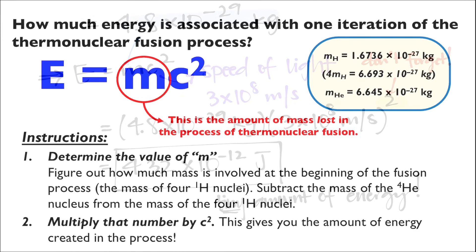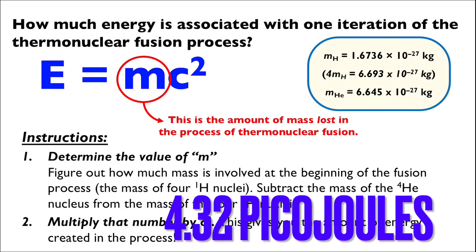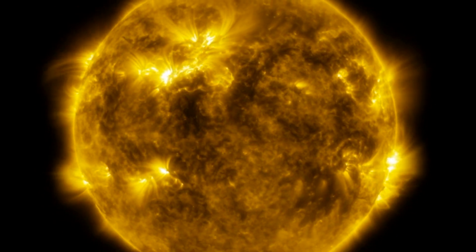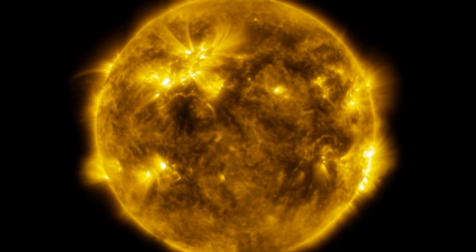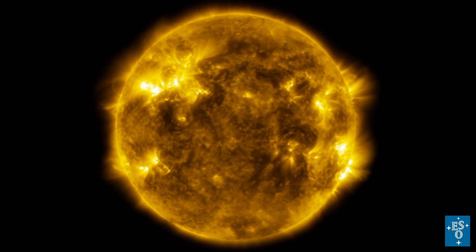emitting 4.32 picojoules of energy in the process. So one iteration of the thermonuclear fusion process gives us a really tiny amount of energy, but with the amount of hydrogen fusing into helium, that number for the energy gets amplified by a lot. And that's how we get the energy from the Sun.